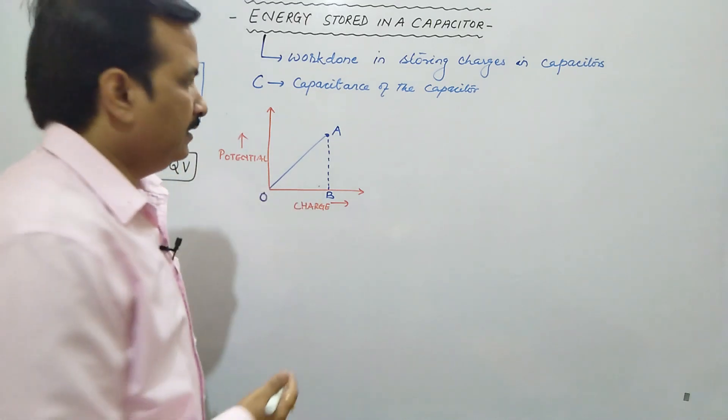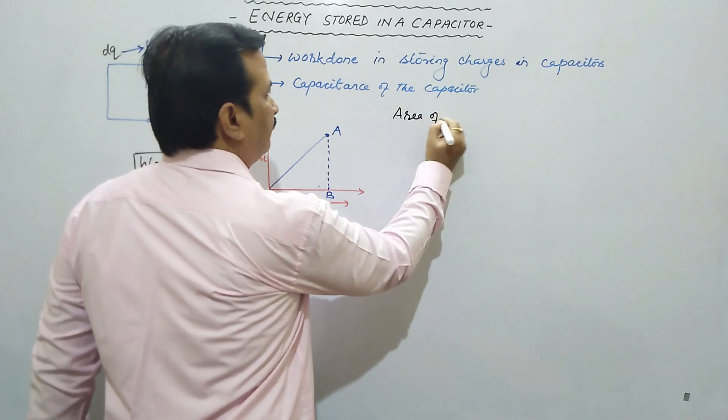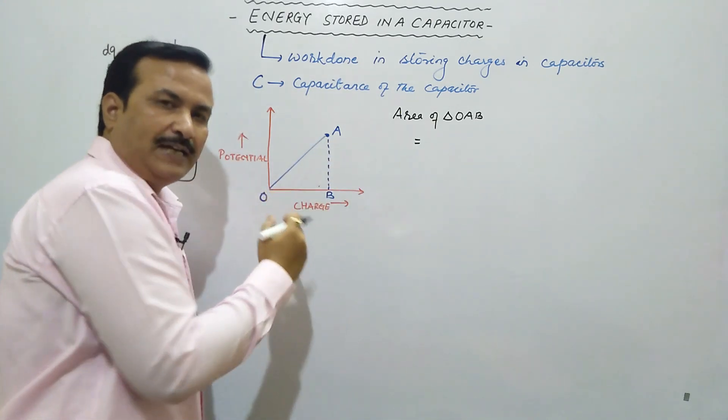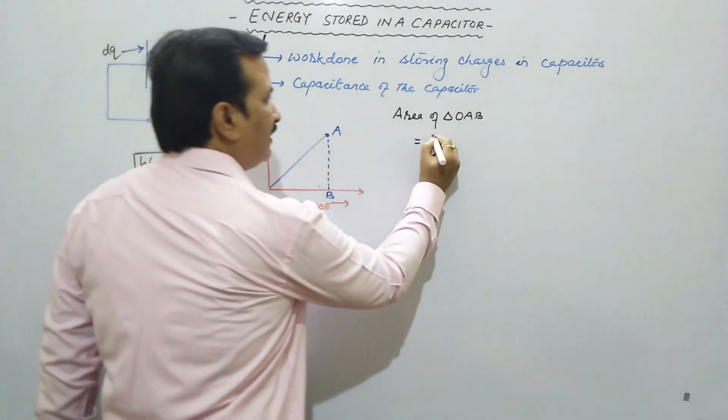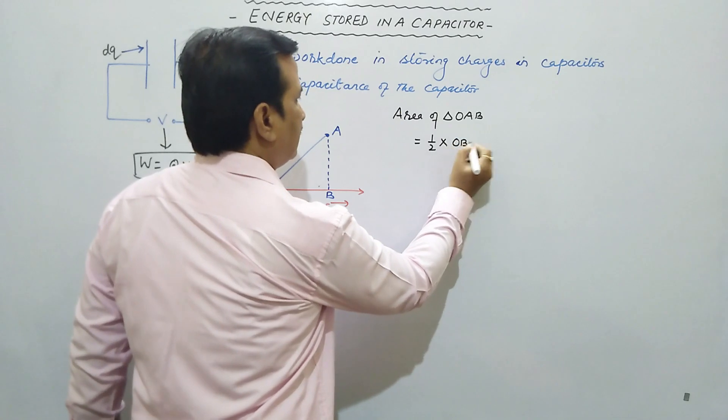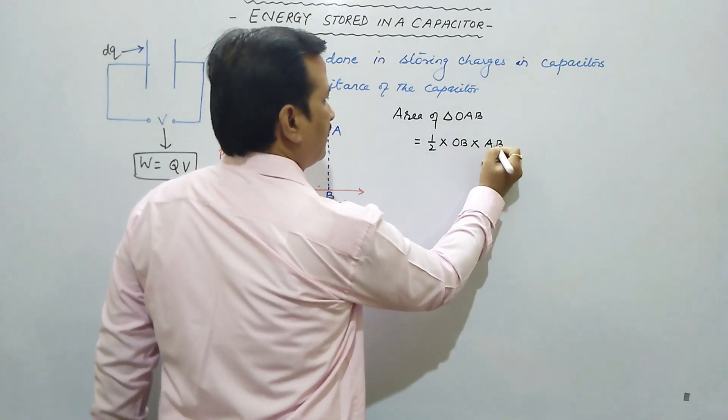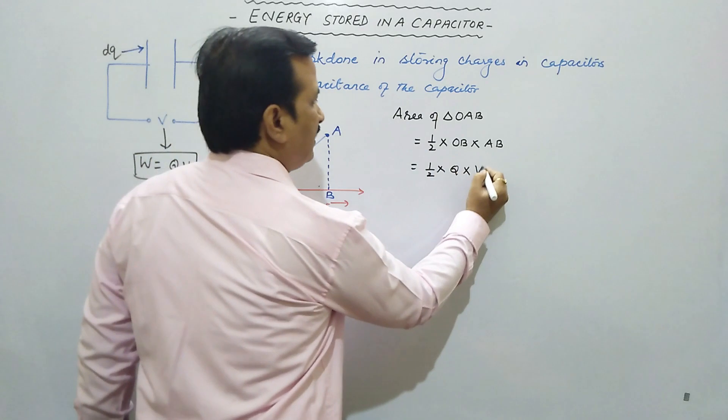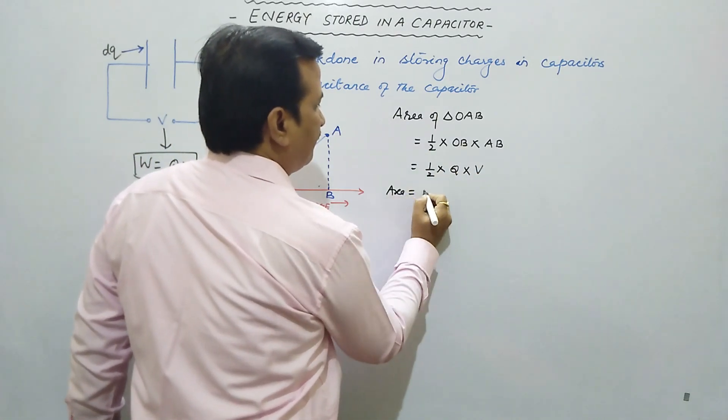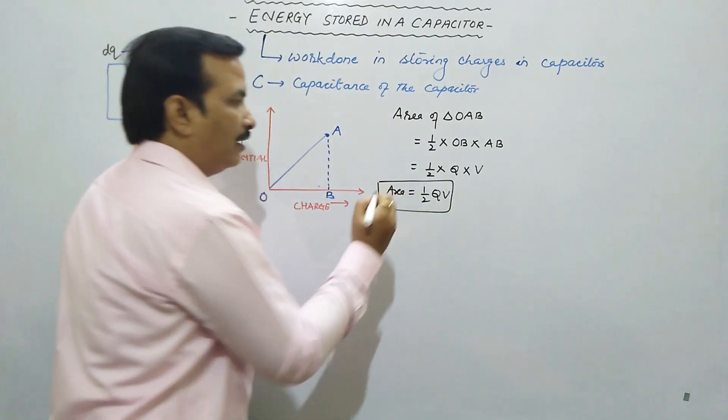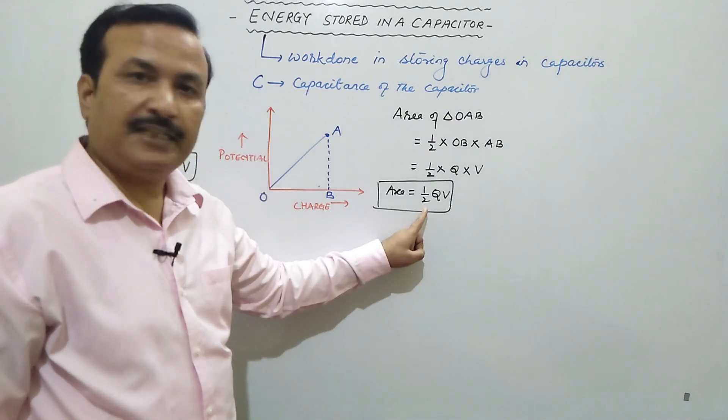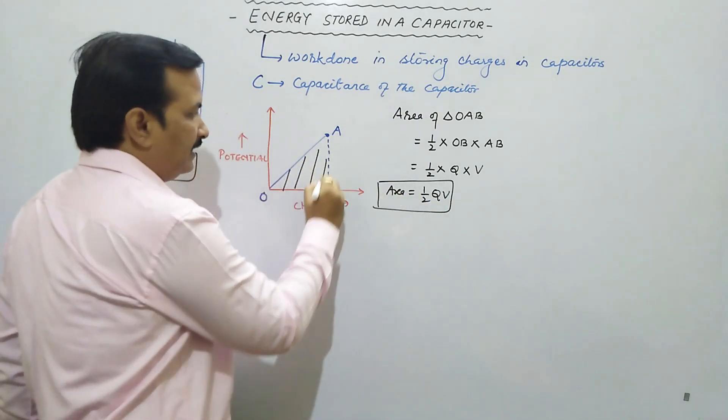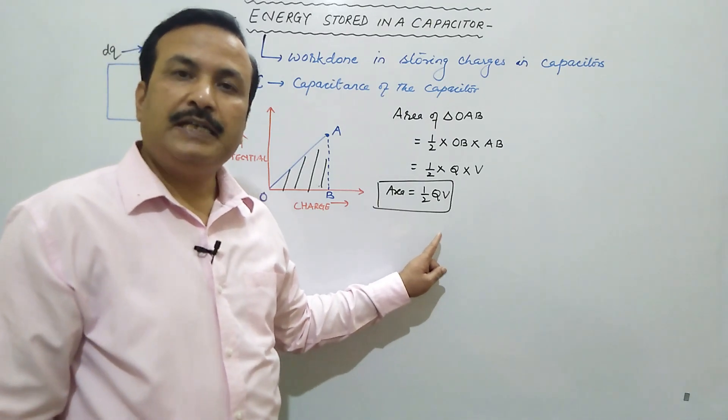If we find the area, what will we get? Area of triangle OAB will be equal to how much? This is a triangle, so triangle's area is half into base into height. So we will get half base OB into height AB, which will give you half. OB is charge Q, AB is potential V. So see here, area we are getting is half QV.